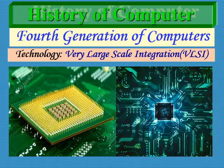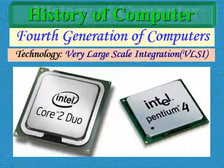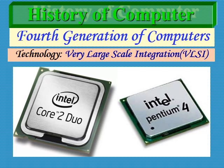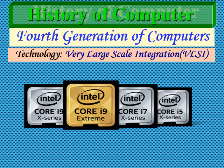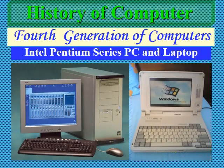Computers developed in the fourth generation include microprocessors and computer chips. Intel Pentium 4, which you can see on your screen, was popular 10 to 15 years ago. Nowadays we are using Core i3, Core i5, Core i7, and Core i9 microprocessors in our desktop and laptop computers. These are the chips of the Core i-series.